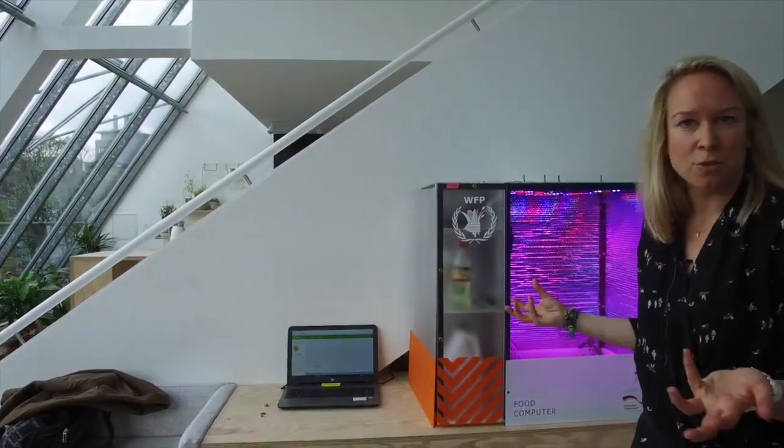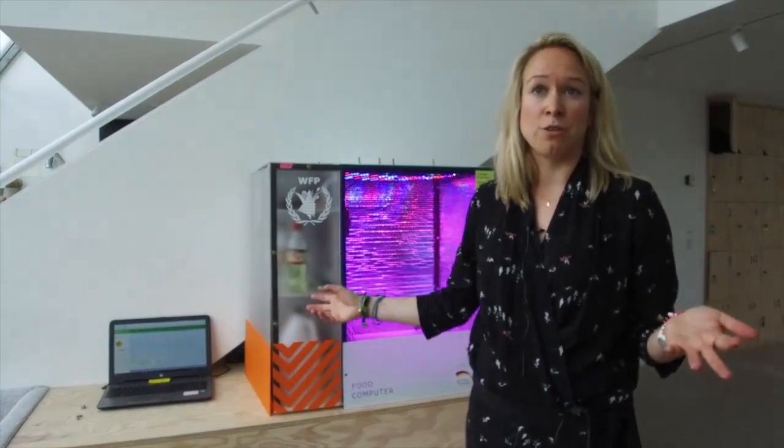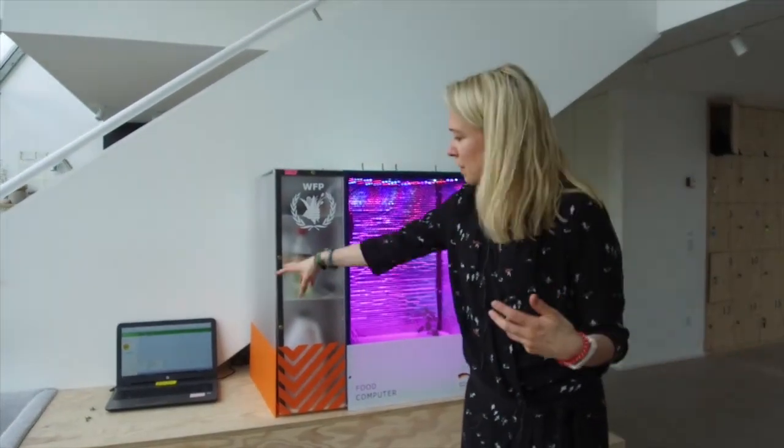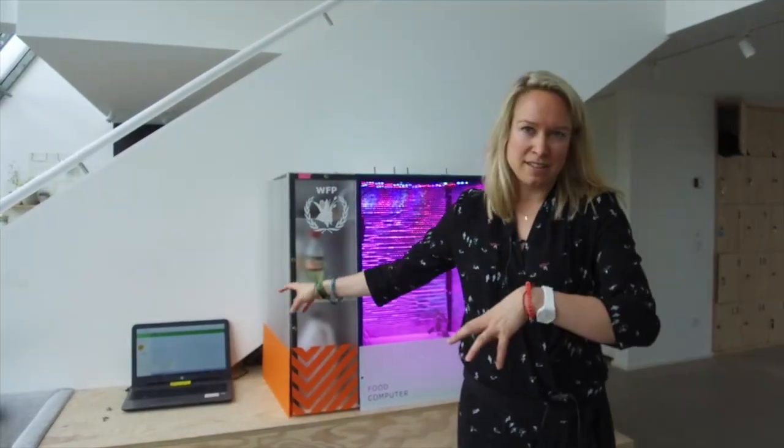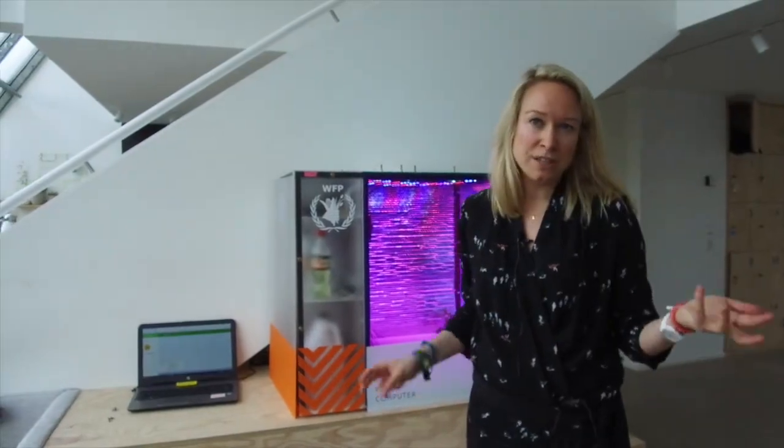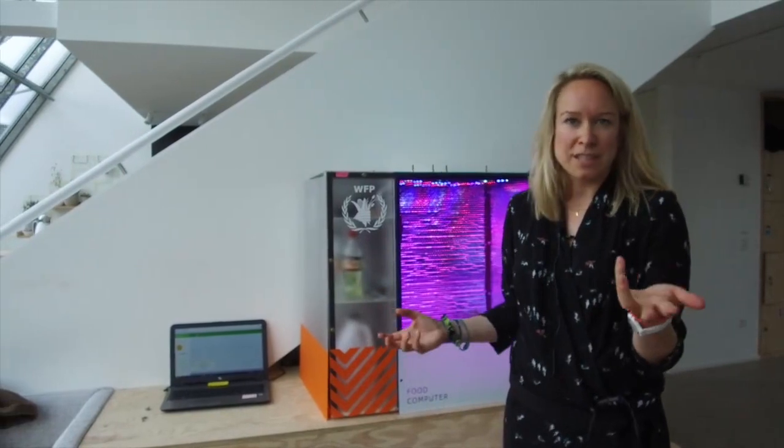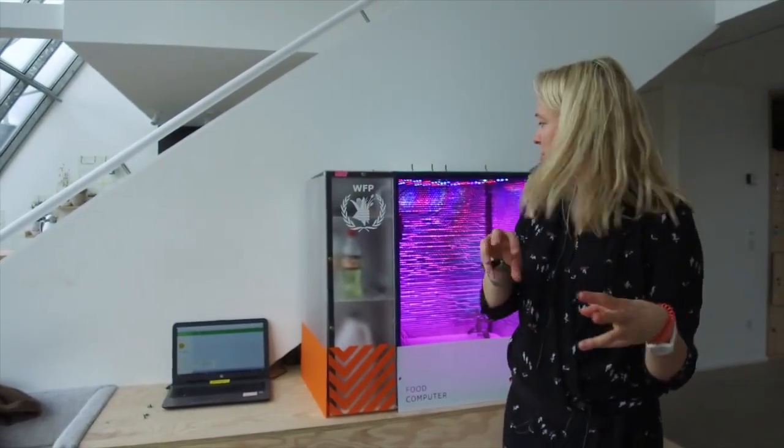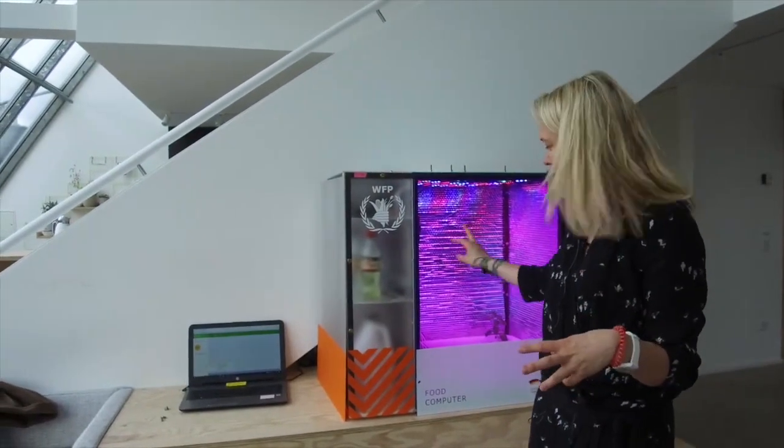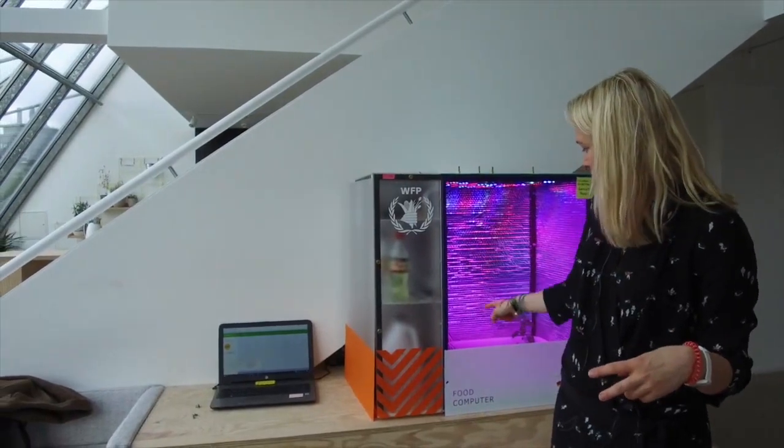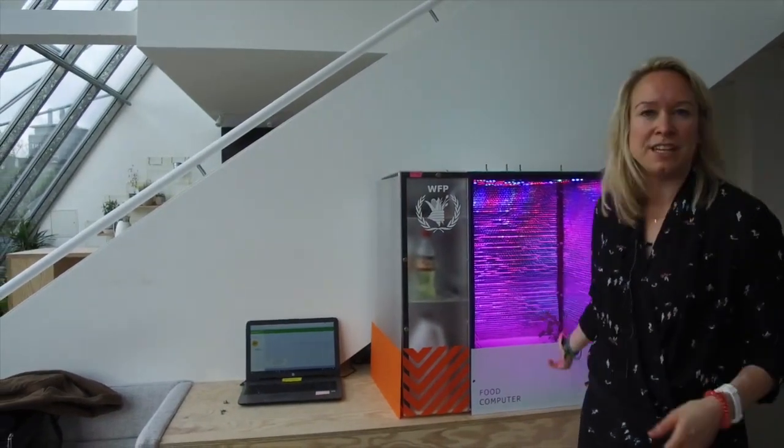All of this can be controlled on a computer and also controlled remotely. So for example here in this computer we could access the food computers placed in Jordan and change the temperature for example inside there. Also the MIT guys in the US can also change the temperature or any kind of situation in there.